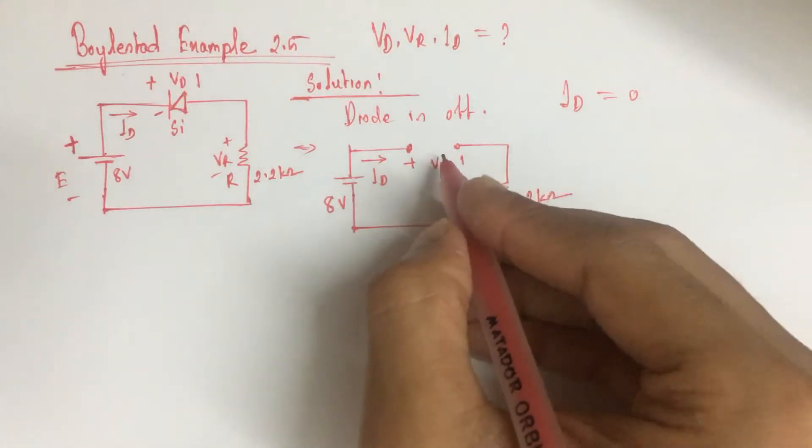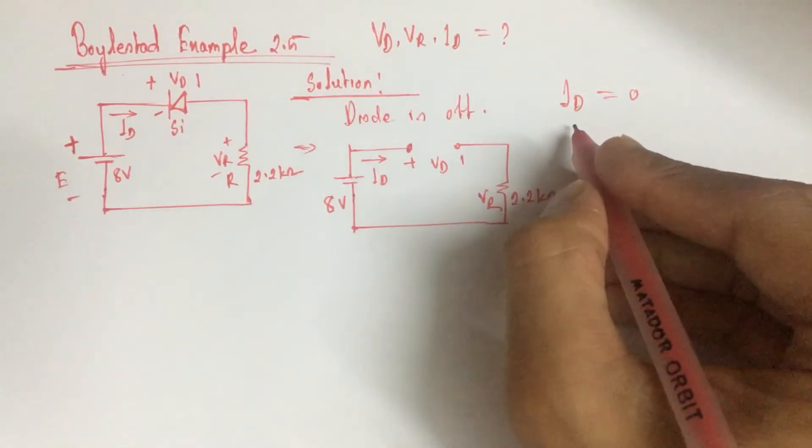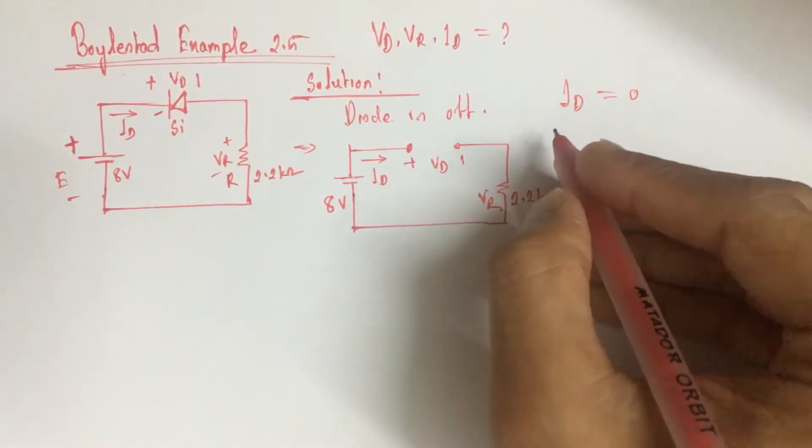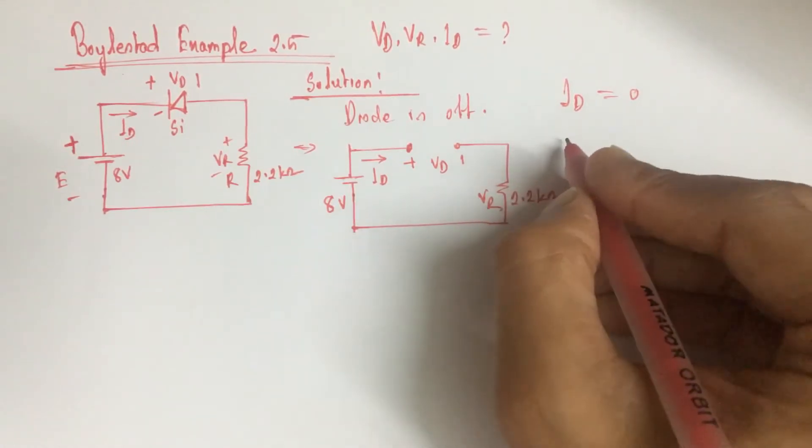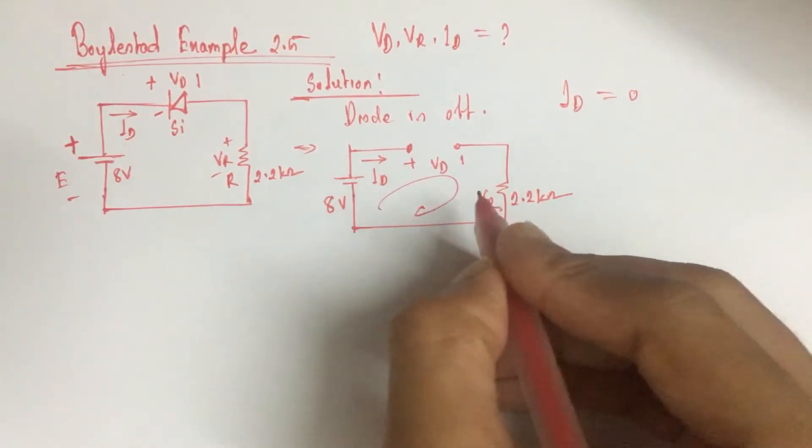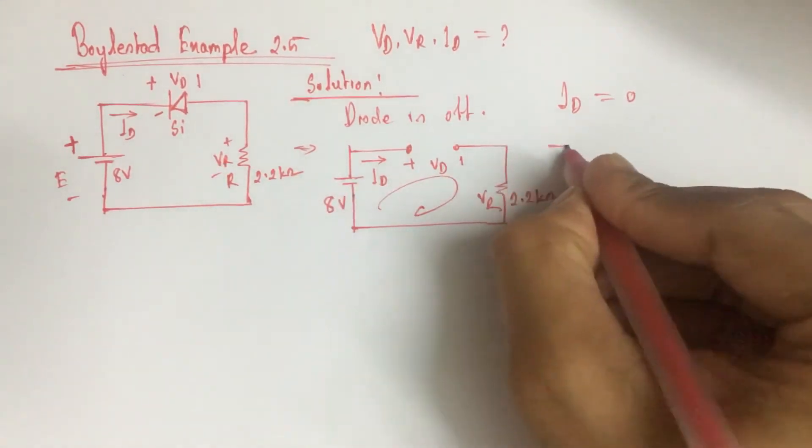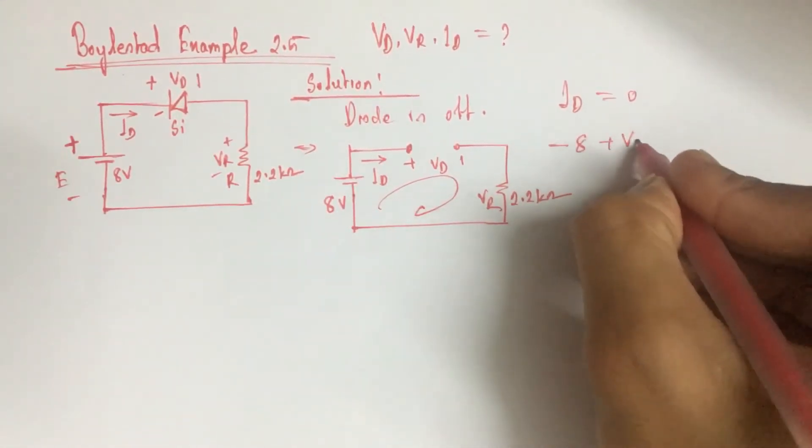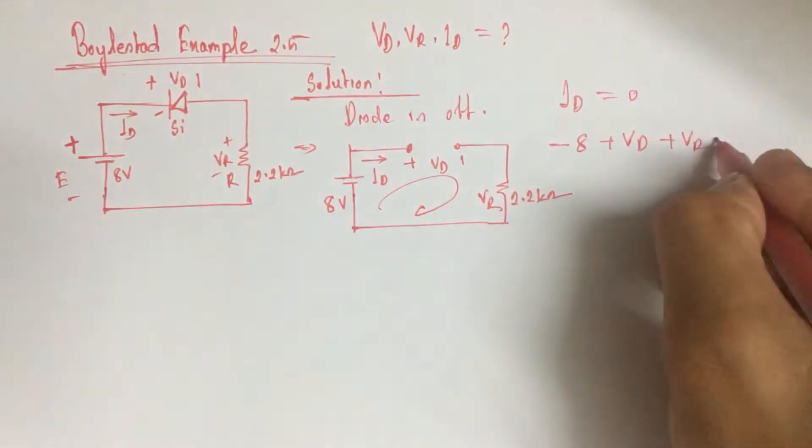So the voltage at this point VD will be found by using Kirchhoff's voltage law throughout the circuit, that is minus 8 plus VD plus VR is equal to 0.